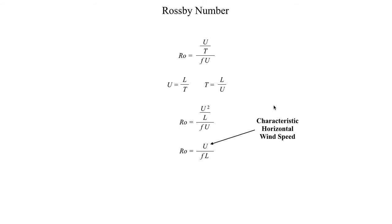This capital U is characteristic horizontal wind speed, and this horizontal length L is the characteristic horizontal length, and then the Coriolis parameter f is also in the denominator.